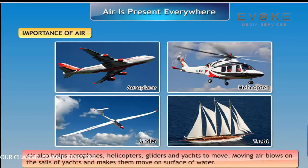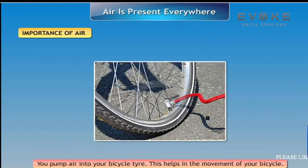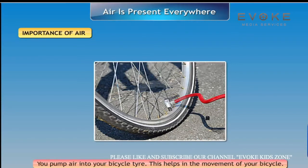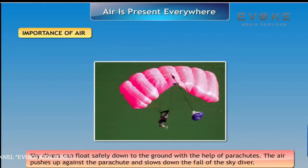Moving air blows on the sails of yachts and makes them move on the surface of water. Air helps birds to fly. You pump air into your bicycle tire, which helps in the movement of your bicycle. Skydivers can float safely down to the ground with the help of parachutes — the air pushes up against the parachute and slows down the fall of the skydiver.